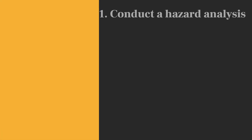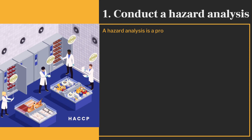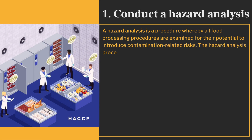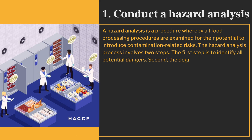A hazard analysis is a procedure whereby all food processing procedures are examined for their potential to introduce contamination-related risks. The hazard analysis process involves two steps. The first step is to identify all potential dangers. Second, the degree of risk that these dangers bring to food safety is assessed.